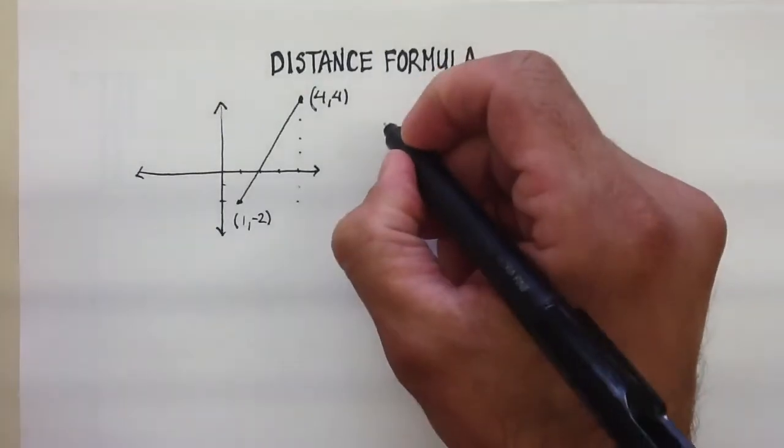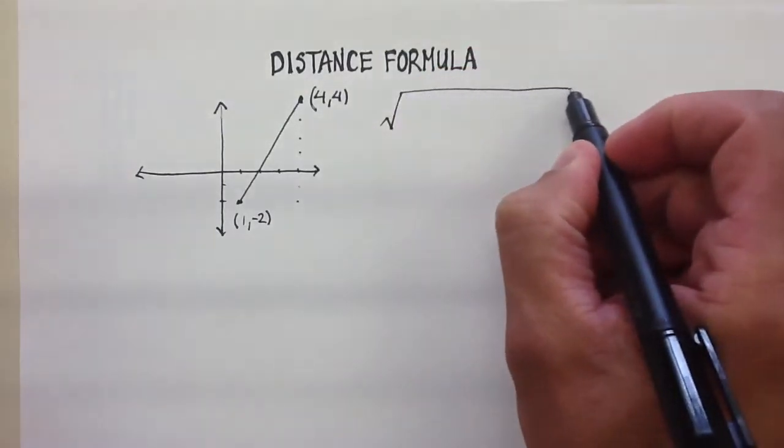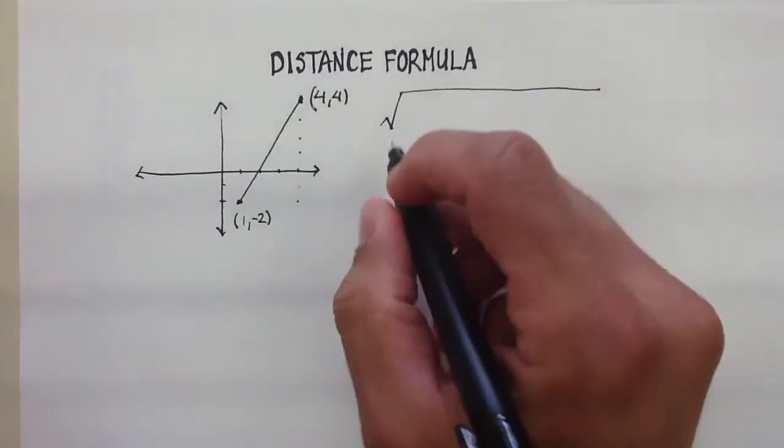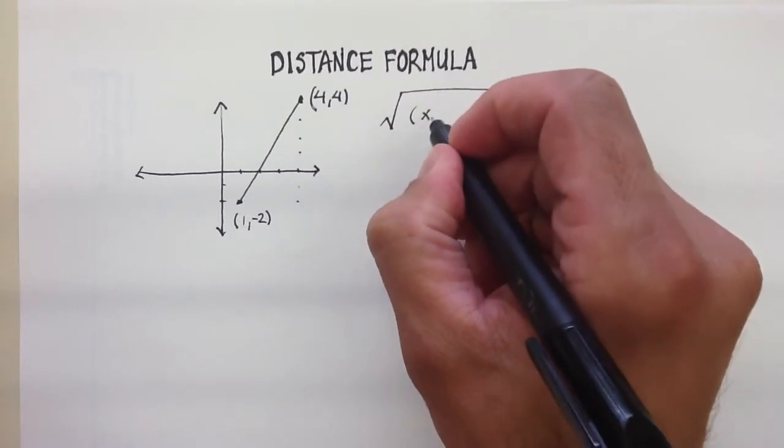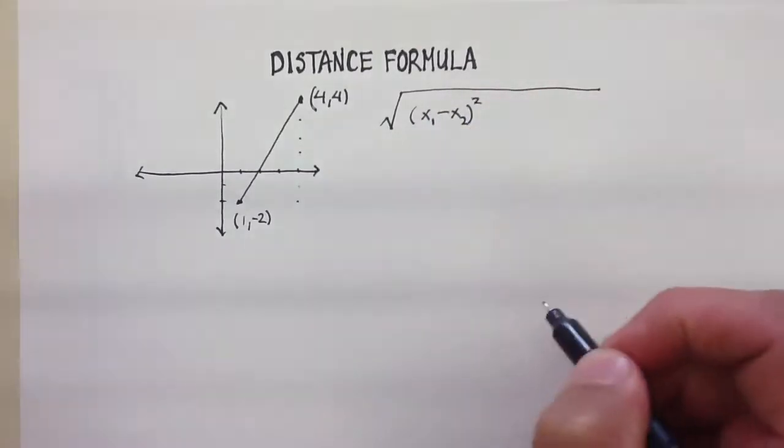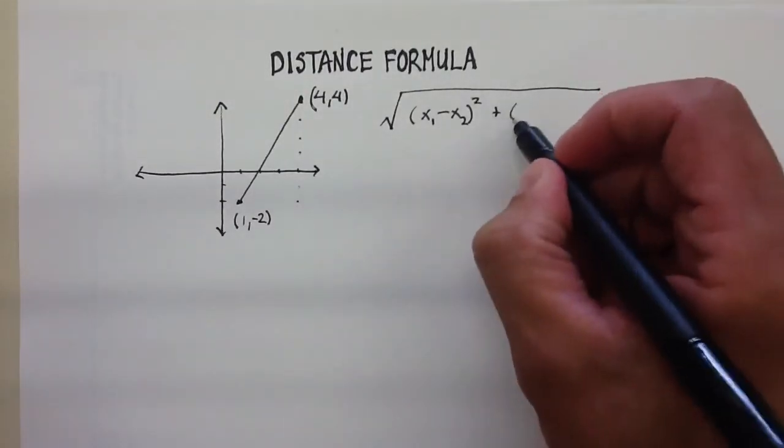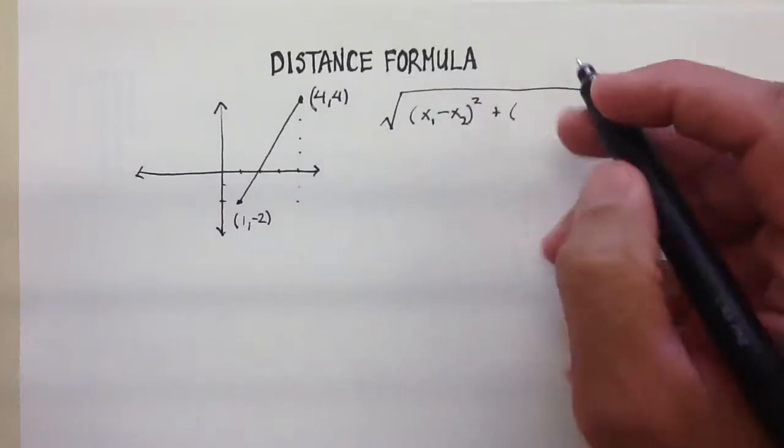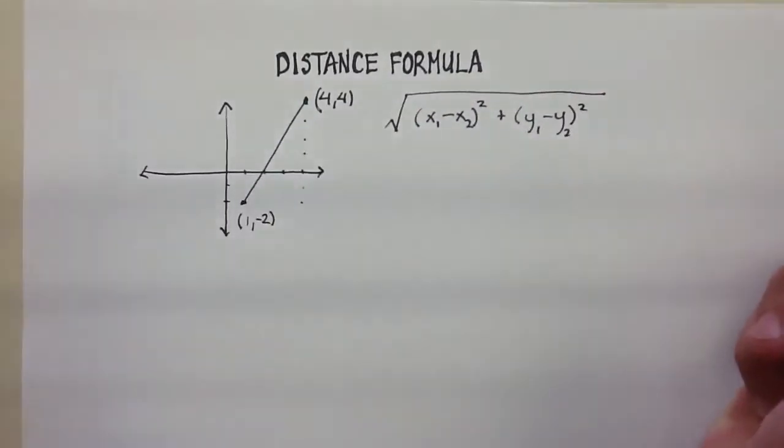And the distance formula is this. It is the square root, let me just write all this out, of the difference between the two x's, so let's just say x1 minus x2, the difference, quantity squared, plus the difference between the two y's, so let's just say y1 minus y2, quantity squared.